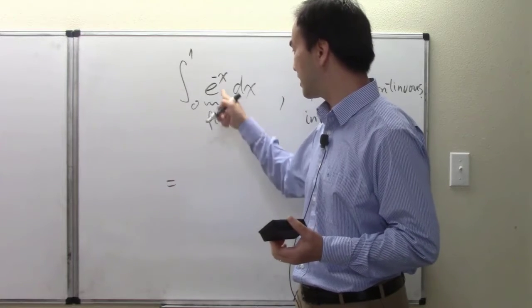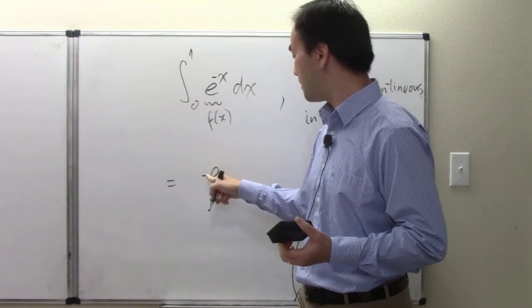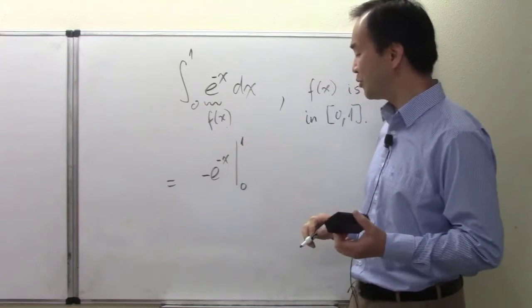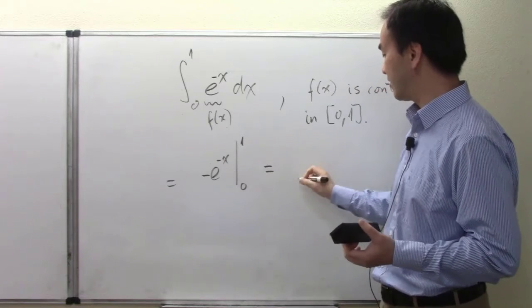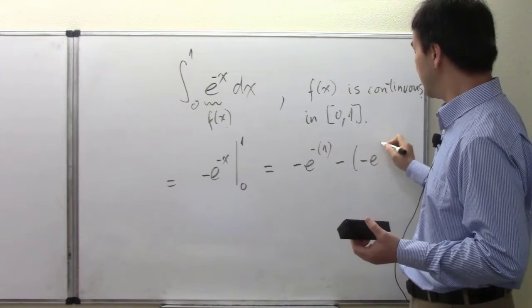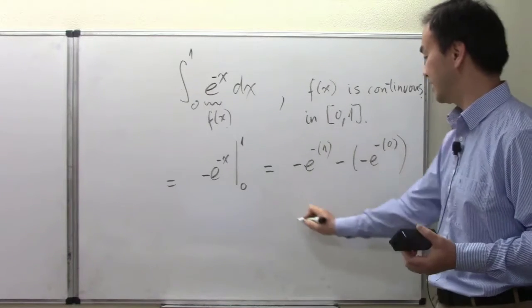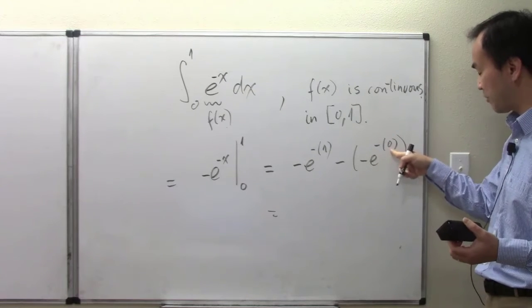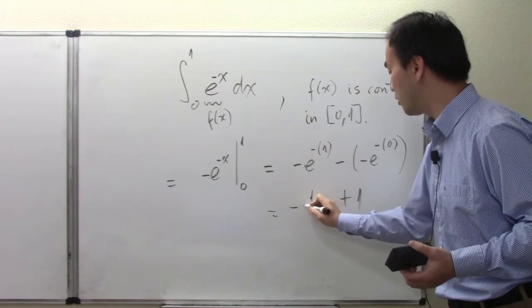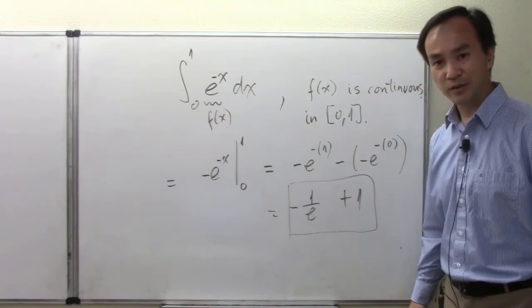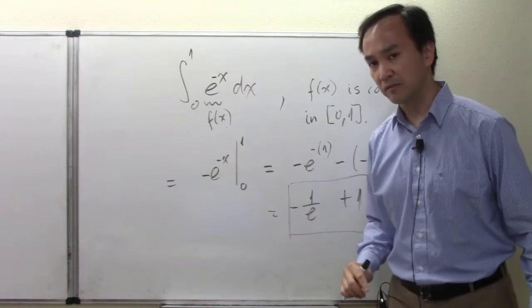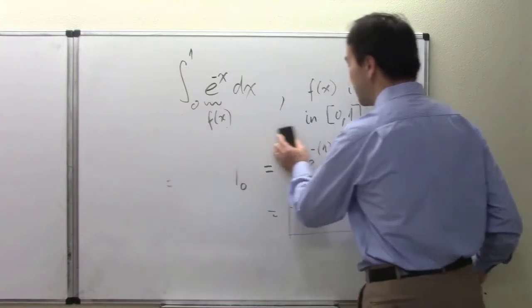With the fundamental theorem of calculus, this is easy. We take the anti-derivative, giving us negative e to the negative x, evaluated from zero to one. The answer comes out to negative e to the negative one, minus negative e to the zero, which simplifies to one minus one over e. This is an easy problem using the fundamental theorem of calculus.